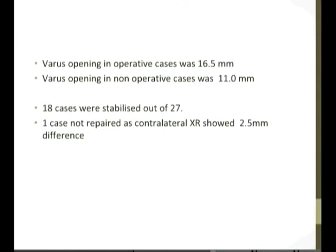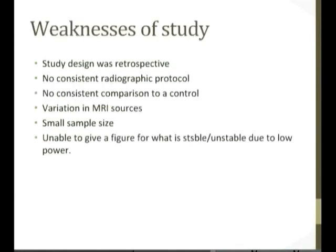Weaknesses of the study include: retrospective design, no consistent varus stress radiograph protocol, no standardised force applied during stress radiographs, and no consistent standard for comparison to a normal or contralateral side. There was also variation in MRI sources, with approximately half the patients having MRIs from outside centres. The small sample size meant the study lacked sufficient power to define absolute threshold measurements for stable versus unstable classification.